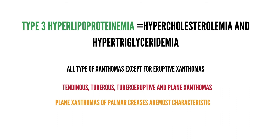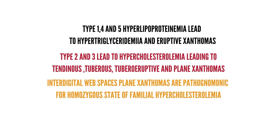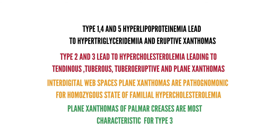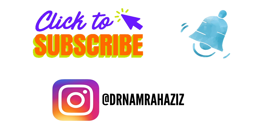For a quick review: types 1, 4, and 5 hyperlipoproteinemia lead to hypertriglyceridemia and eruptive xanthomas. Types 2 and 3 lead to hypercholesterolemia with tendinous, tuberous, tubero-eruptive, and plane xanthomas. Interdigital web space xanthomas are characteristic for type 2 hyperlipoproteinemia, and palmar crease xanthomas are characteristic for type 3 hyperlipoproteinemia. Thank you for watching — don't forget to subscribe and hit the bell icon, and follow me on Instagram at Dr. Namra Aziz.